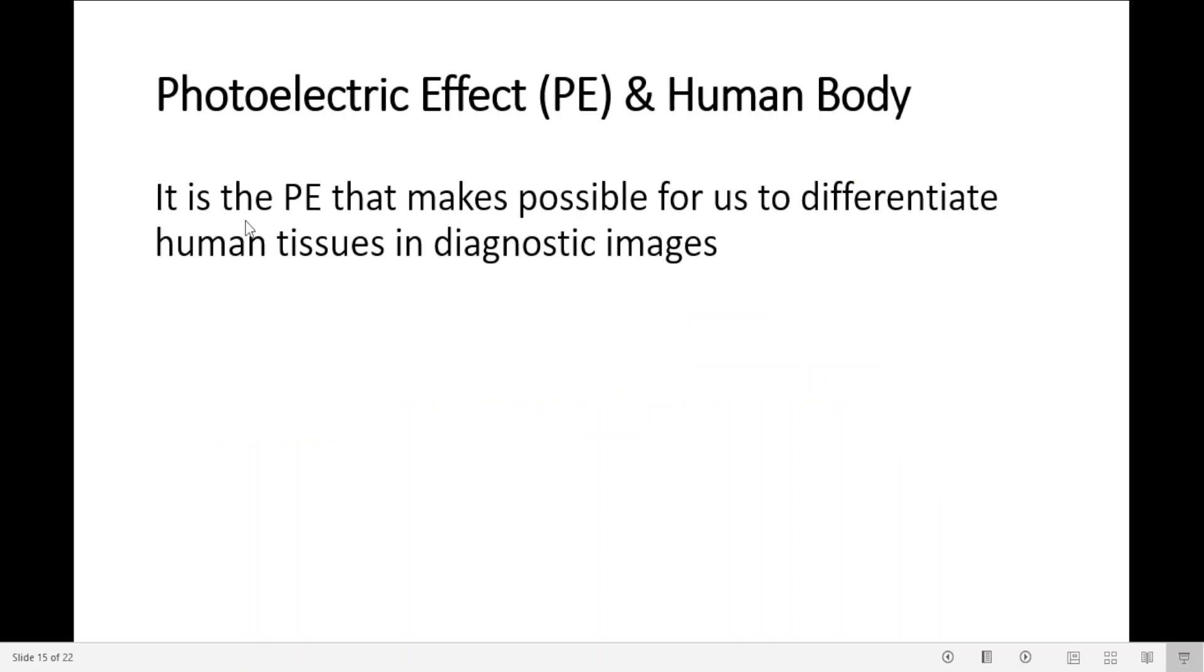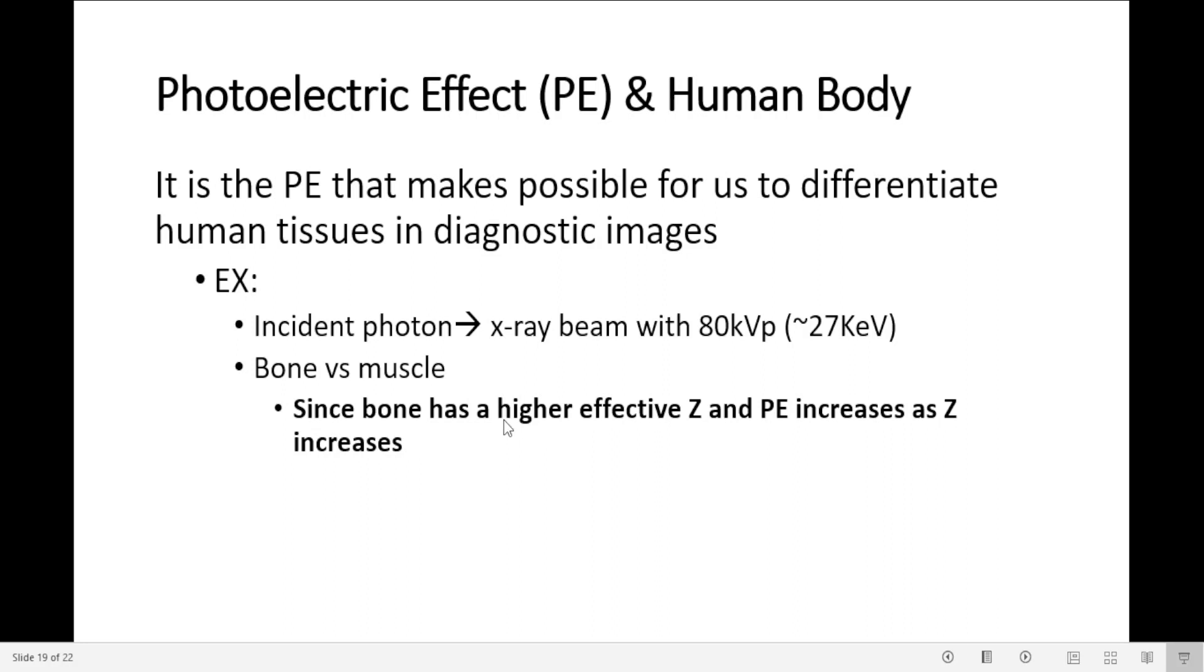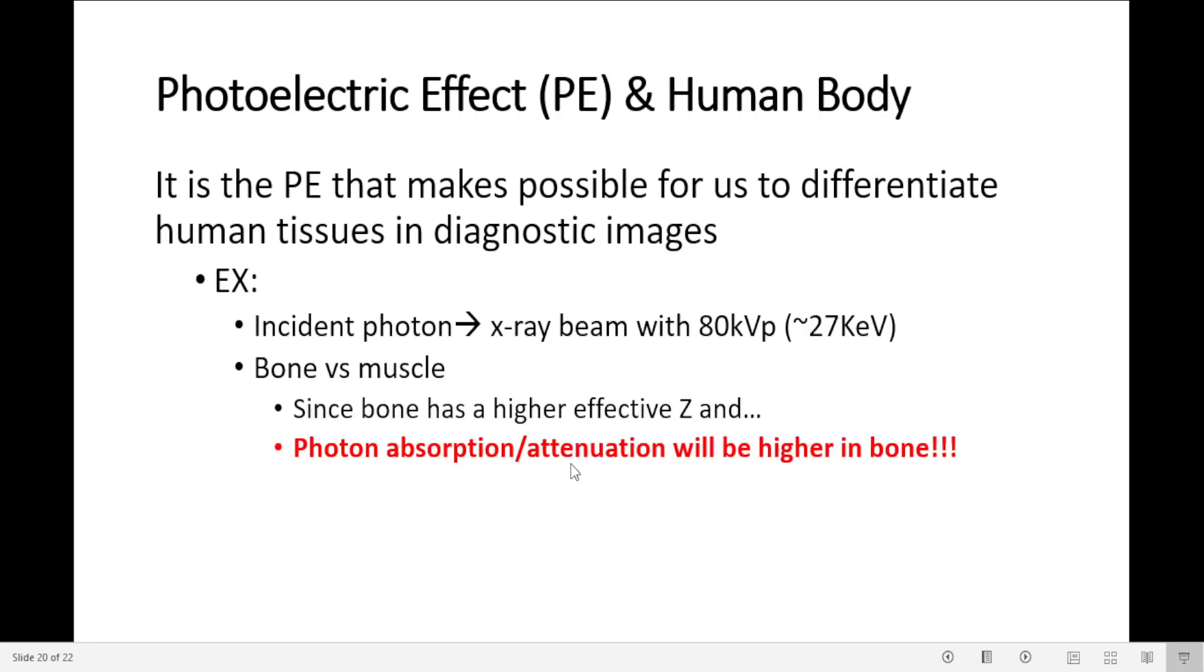It is the photoelectric effect that makes it possible for us to differentiate human tissues in diagnostic images. For example, if we have an incident photon, an X-ray beam of 80 kVp, we know that in this energy range there is a high chance of photoelectric effect to occur. Let's compare bone versus muscle. Since bone has a higher effective atomic number and the photoelectric effect increases as the atomic number increases, the photon attenuation and absorption will be higher in bone.